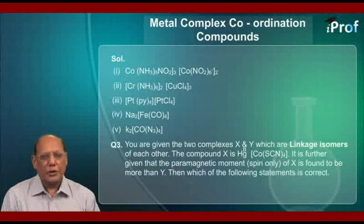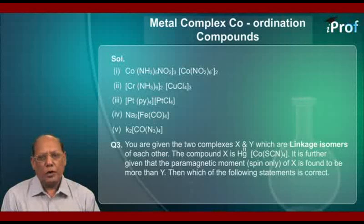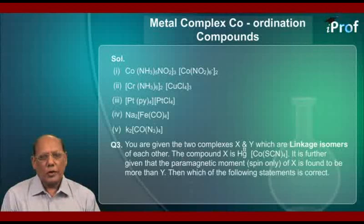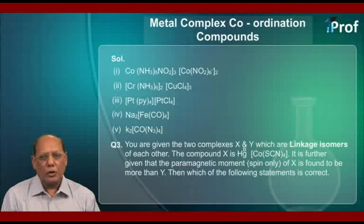Question number three. You are given two complexes X and Y, which are linkage isomers of each other. Compound X is: (Hg)2[Co(SCN)4]. It is further given that the paramagnetic moment (spin only) of X is found to be more than Y.